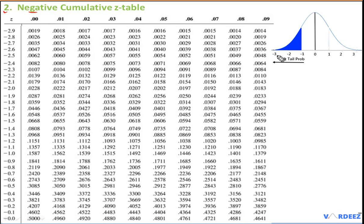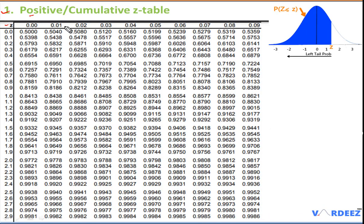On the FRM exam you will most probably be given only the positive table, but with the positive table alone you can find any value of the standard normal distribution. We're going to look at how to do that, and all the examples we work through will use the positive table.